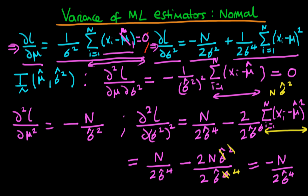So now we've got all of our components for our estimator for the information matrix. In the next video, I'm going to group them together and then derive what the Cramér-Rao lower bound is for the case of a normal distribution when estimating via maximum likelihood.